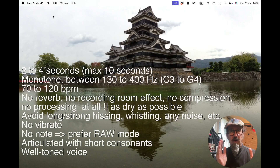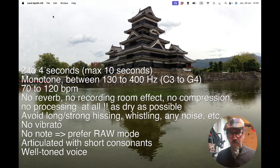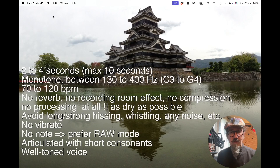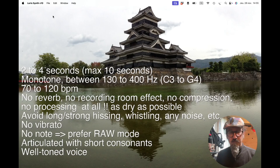Remember that there are 512 slices, whatever length you use for the samples. Whenever you go for a long sample, the transient will not be good. The best results for transients will be between 2 and 4 seconds.